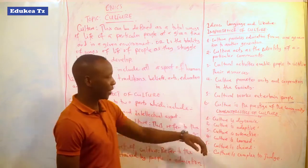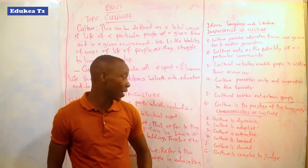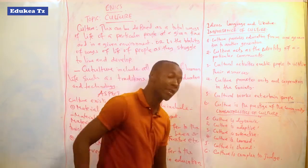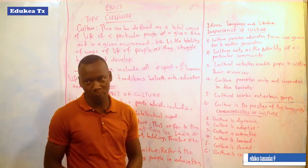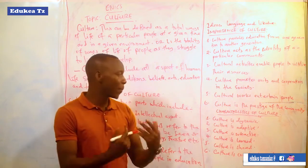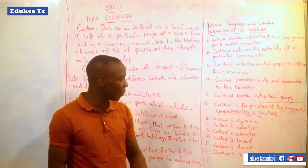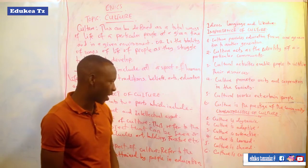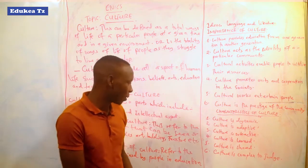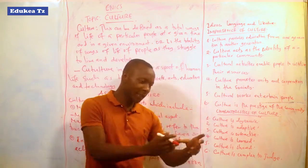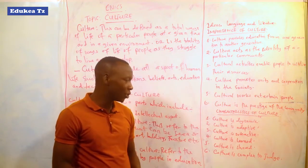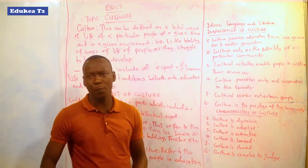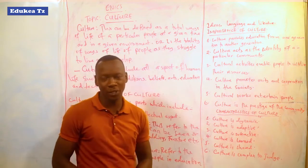Now let us see the characteristics of culture. First, culture is dynamic — not static. Culture is dynamic due to various factors: it can change due to the migration of people from one place to another, or people may decide to change because of new generations. As new generations come, culture moves to another stage. Second, culture is adaptive. This means that the culture of a particular place changes and adapts according to the coming of new people or the shifting of people. As people move from one place to another, they adopt the culture of that community and leave behind their own.